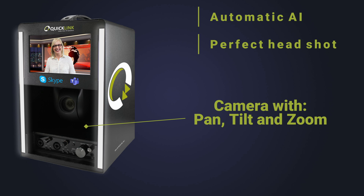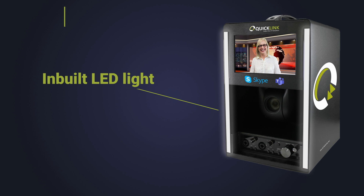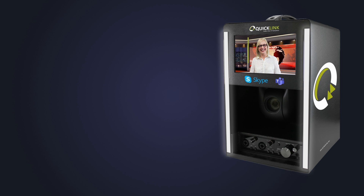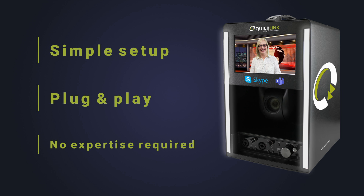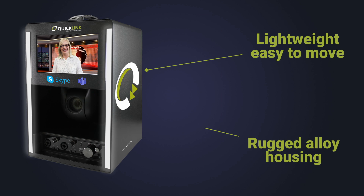Automatic artificial intelligence uses the inbuilt pan, tilt and zoom camera to create the perfect head and shoulder frame shot. Inbuilt LED lighting ensures that your shot is optimized for clarity. Simple setup, plug and play with no technical expertise required. Lightweight, rugged alloy housing that is small enough to fit into a carry case.